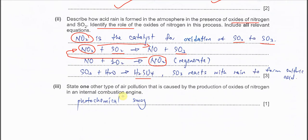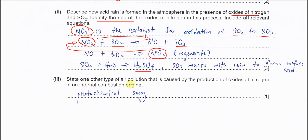For part three: state one other type of air pollution caused by nitrogen oxides. Nitrogen oxides react with hydrocarbons to form photochemical smog, or PAN (peroxyacetyl nitrate). Both answers are acceptable — photochemical smog or PAN, which is the short form of the chemical.